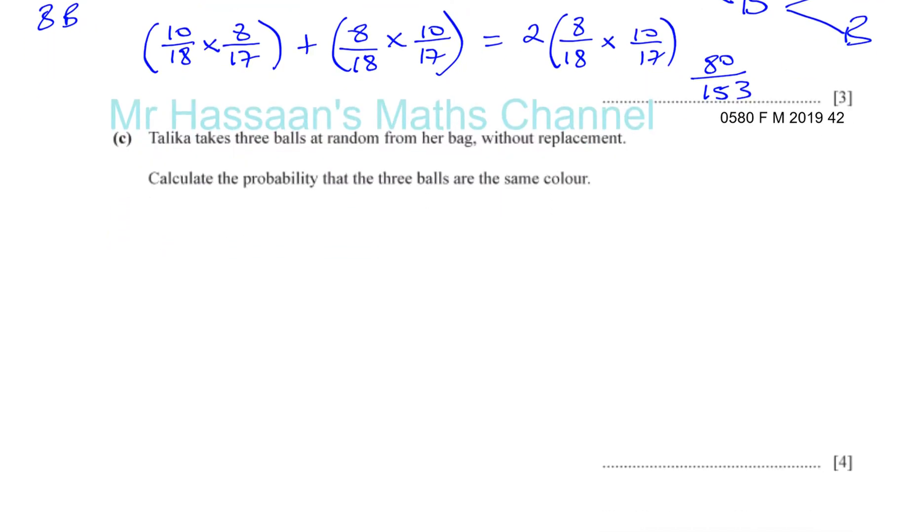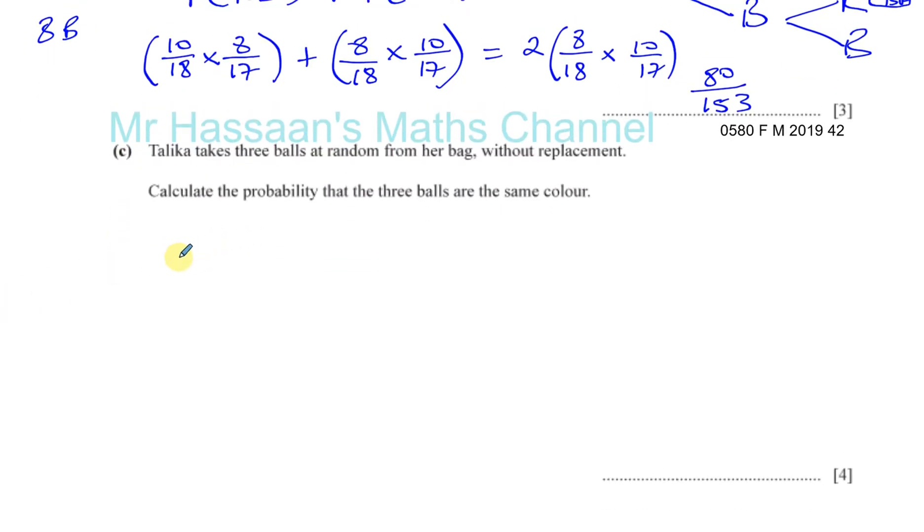The next question says, Talika takes 3 balls at random from her bag again without replacement. So she's got 18 altogether of which 10 are red and 8 are blue, same as the others. Now this time she's taking 3 balls. She's taking a pick and she's not putting it back in, taking another pick, not putting it back in and taking a third pick. So we've got to find the probability that the 3 balls are the same colour.